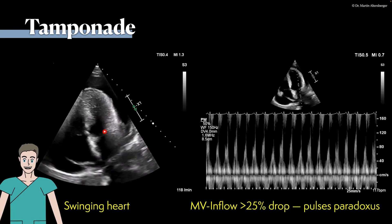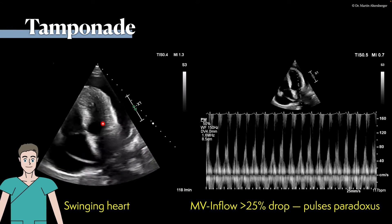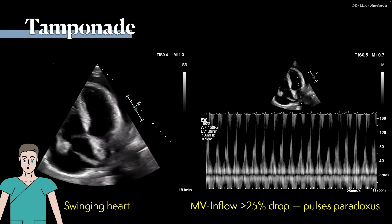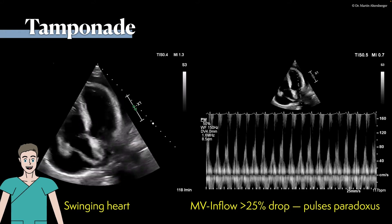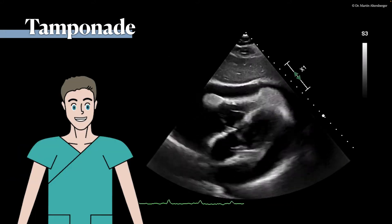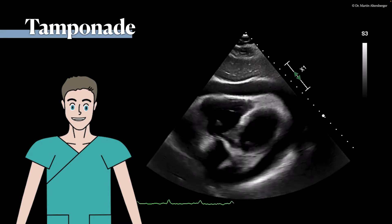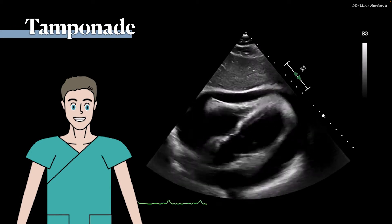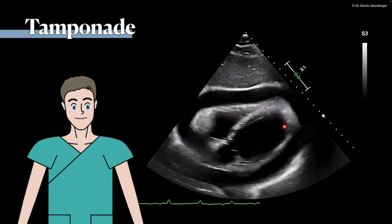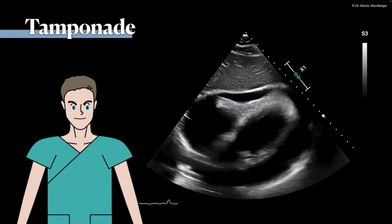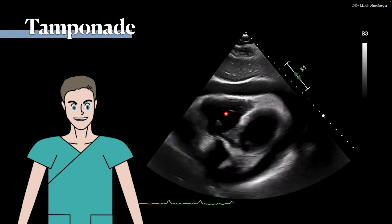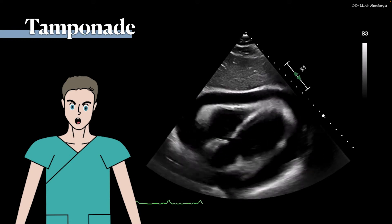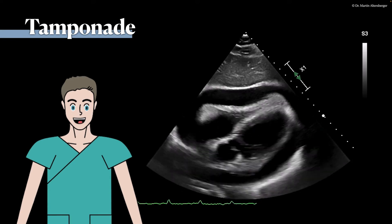Be aware that when you look at the swinging heart and place the pulsed-wave Doppler in the region of the mitral valve, sometimes you might lose the optimal position, so this sign has to be interpreted with caution. Moving on to a subcostal view: the subcostal four-chamber view is the view to evaluate pericardial effusion and tamponade. In this case, we see a moderate to large-sized pericardial effusion, and the right ventricle definitely cannot fully dilate during diastole — so this is echocardiographic tamponade.